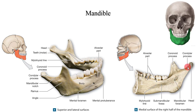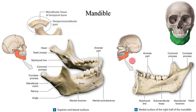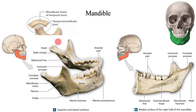The condylar processes extend to the smooth articular surface of the head of the mandible. The head articulates with the mandibular fossa of the temporal bone at the temporomandibular joint (TMJ). This joint is quite mobile, allowing us to move the lower jaw when we talk and chew. However, the disadvantage of such mobility is that forceful anterior or lateral movements of the mandible can easily dislocate the jaw. The anterior projection of the ramus, termed the coronoid process, is the insertion point for the temporalis muscle, a powerful muscle involved in closing the mouth. The U-shaped depression between the two processes is called the mandibular notch.